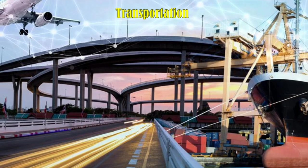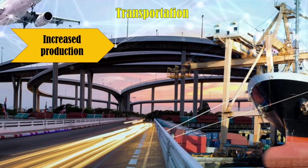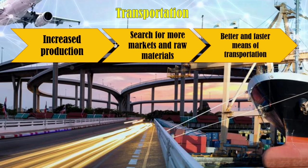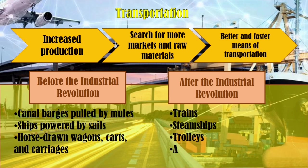Now let's move to transportation. Because of the invention of transportation, this increased the production of goods. Producers could now search for more markets outside their location and sources of raw materials. Before the Industrial Revolution, the mode of transportation was canal barges pulled by mules, ships powered by sails, or horse-drawn wagons, carts, and carriages.